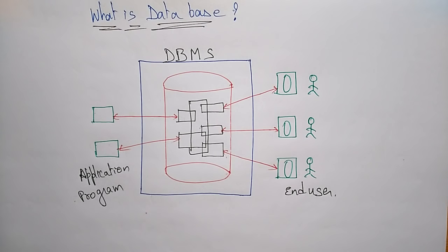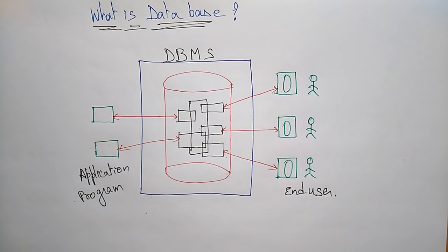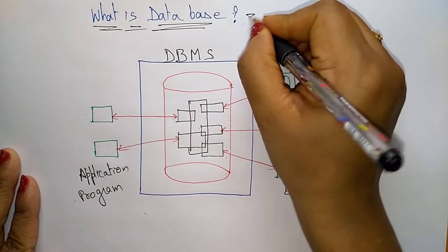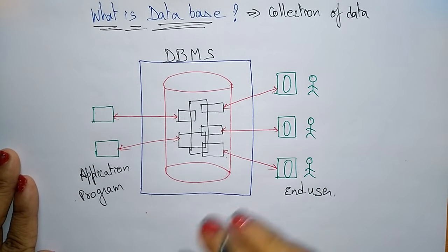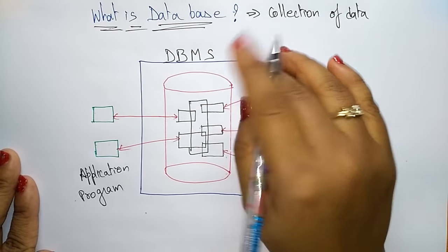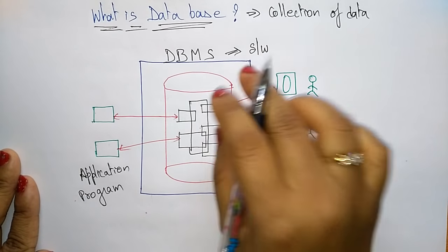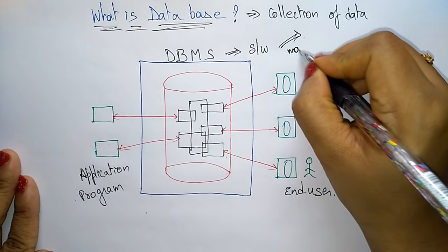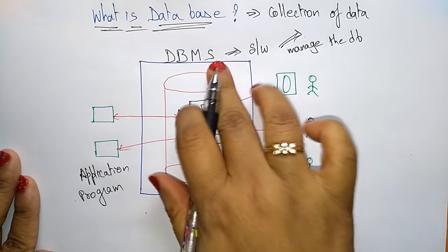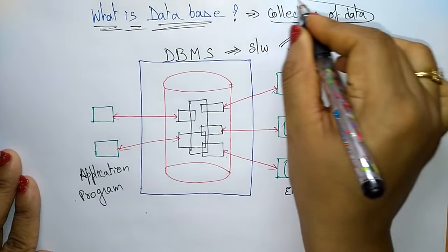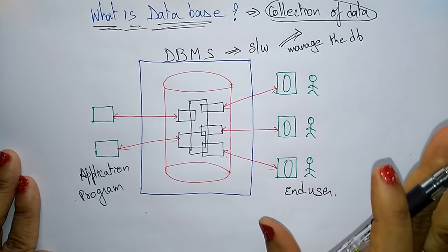Coming to the next topic in database management system: what is a database? A database is nothing but a collection of data. DBMS means it is a software — you have to remember DBMS is a software which is used to manage the database, which is used to manage this collection of data. A database management system is a software used to manage this collection of data.